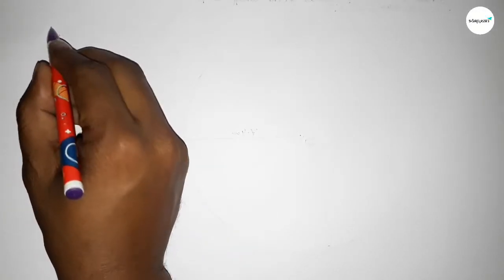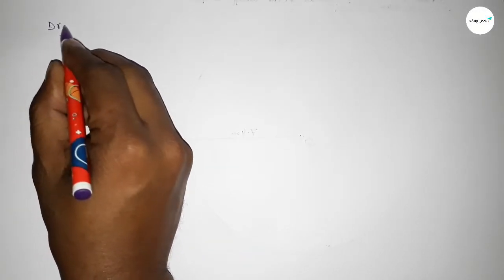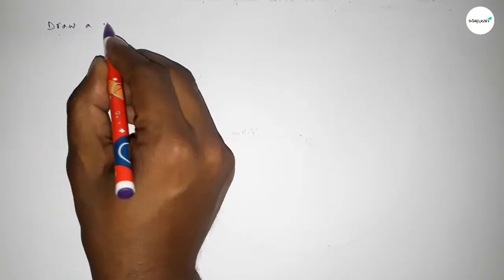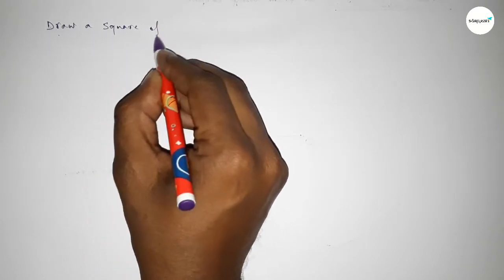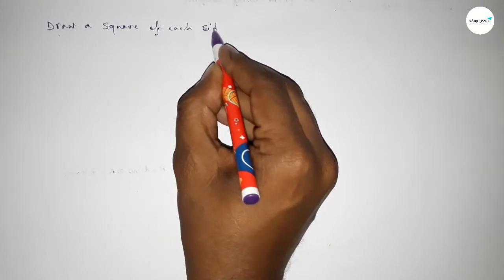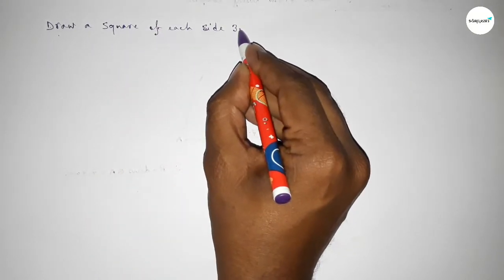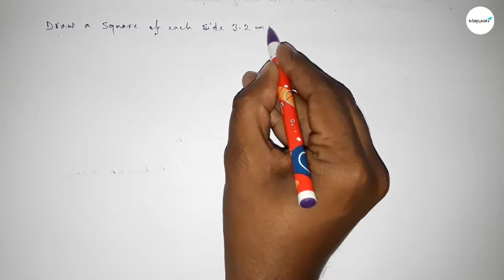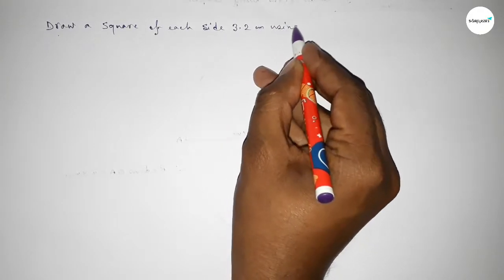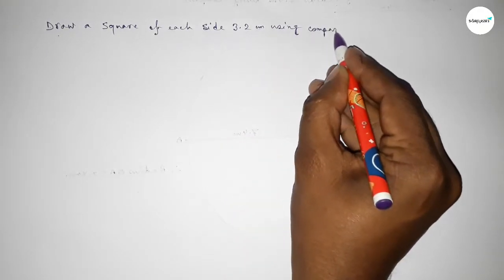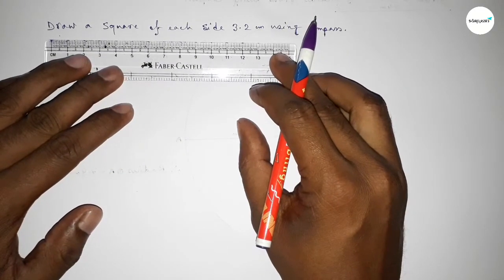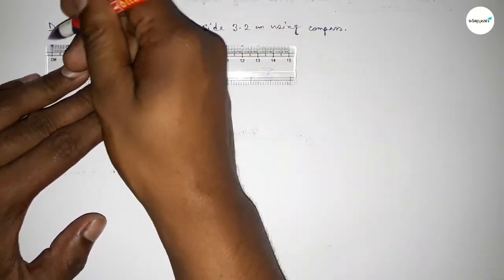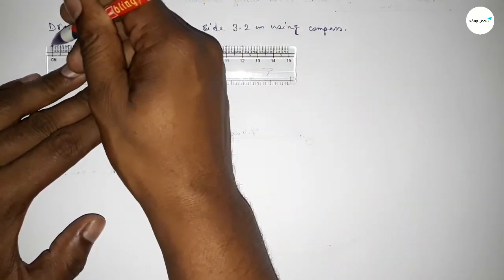Hi everyone, welcome to SI Share Classes. Today in this video we have to draw a square of each side 3.2 centimeter by using a compass. So let's start the video. First of all, drawing here the length 3.2 centimeter.